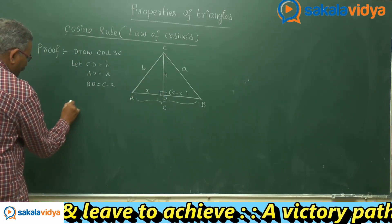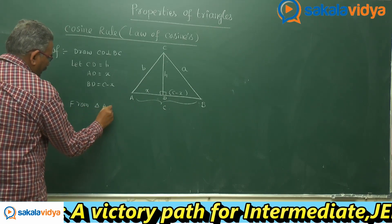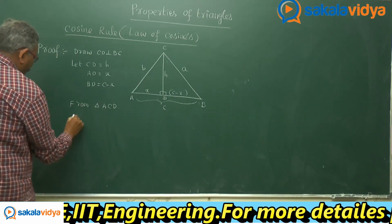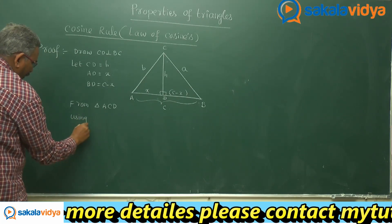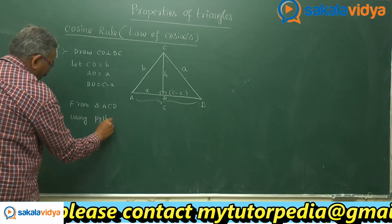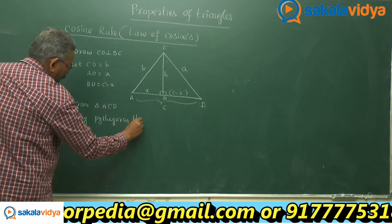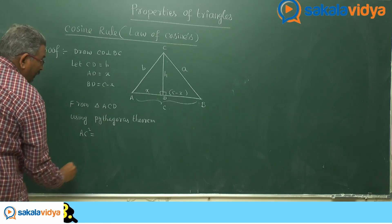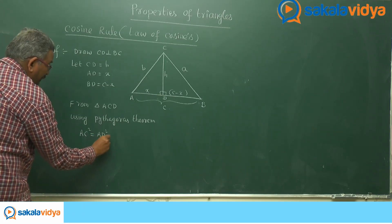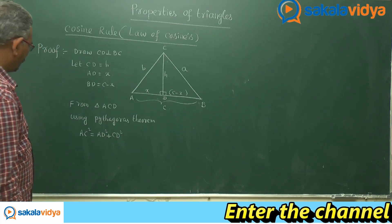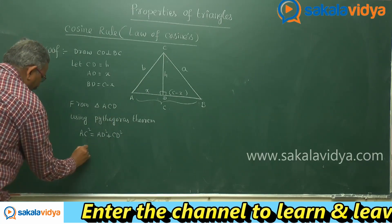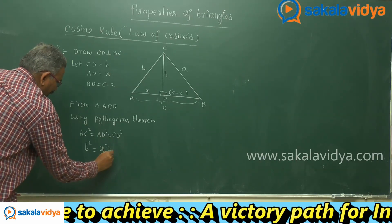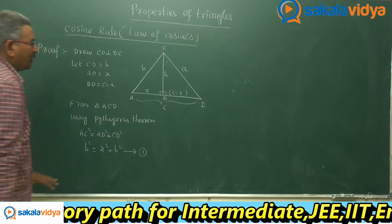From triangle ACD, apply the Pythagorean theorem: AC² = AD² + CD². Here AC is replaced by b, so b² = x² + h². Call this relation 1.